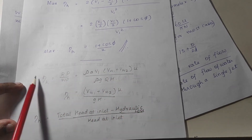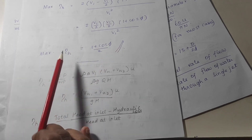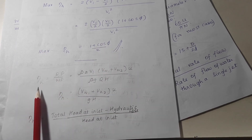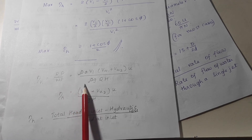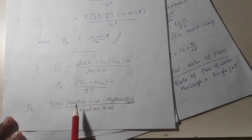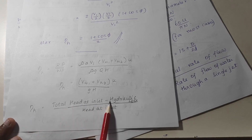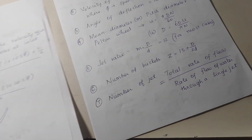Hydraulic efficiency can also be expressed as runner power divided by water power. If water power is given and we need to find hydraulic efficiency, use that formula. Alternatively, hydraulic efficiency can be found using: (total head at inlet minus hydraulic loss) divided by head at inlet. You must check what is given in the problem and choose the appropriate equation accordingly.